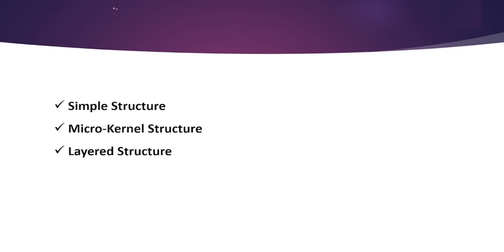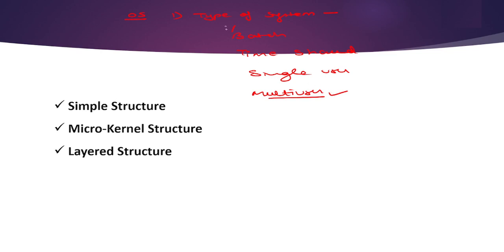When designing an operating system, the first step is to specify the type of system. The type of system includes batch processing system, time-shared processing system, single user or multi-user systems, and so on — whatever type of system you want to build. Users in general want the system to be faster, reliable, flexible, and efficient.